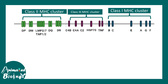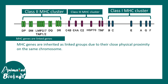This is how the overall cluster looks — this is an oversimplified diagram. The major players in Class 1 MHC are A, B, and C, and the Class 2 MHC major players are DP, DM, and DR.